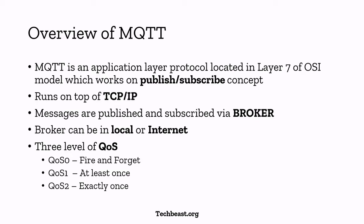MQTT provides three levels of Quality of Service. QoS 0 means the publisher just sends the data to the broker and the subscriber just receives it — fire and forget, with no acknowledgements. QoS 1 means at least once — the broker ensures the data is delivered to the subscriber. QoS 2 means exactly once — the publisher publishes the data and the broker ensures the subscriber receives the data exactly once, properly delivered. You can choose any QoS level according to your application needs.